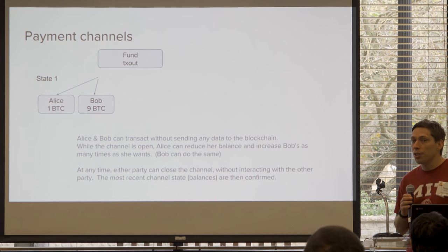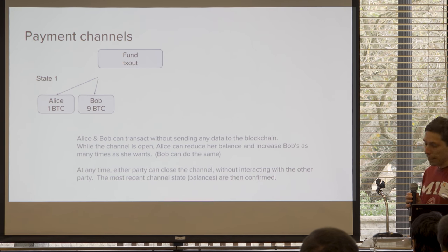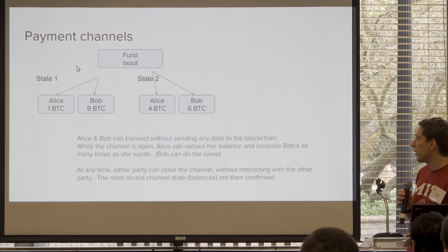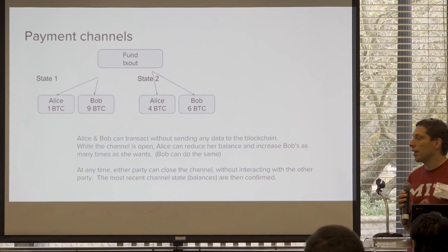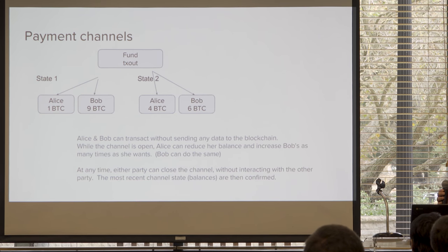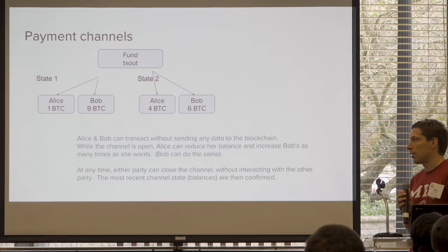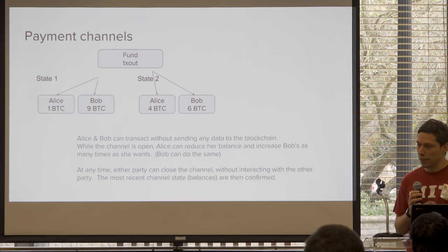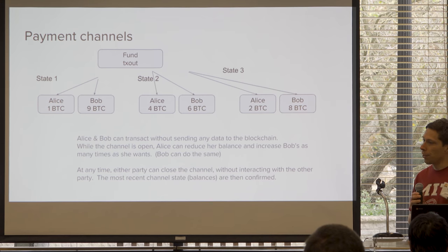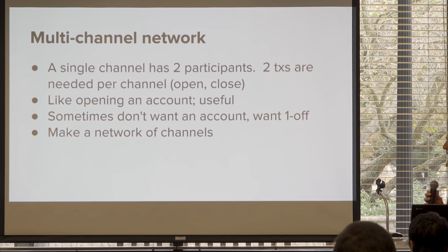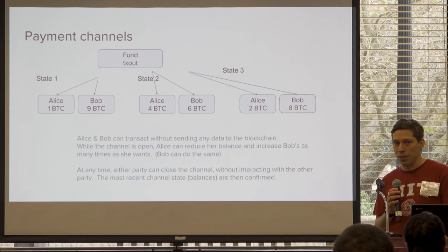Whenever either of them want to, they can broadcast. But instead what they do is exchange new signatures. Alice will say, okay, the new transaction we're going to agree on is I have four and you have six. They both send signatures for that transaction. Then the next state is Alice has two, Bob has eight. You can do this back and forth as many times as you want. I'll go into more depth of how exactly these things work — I'll go into a lot of gory details later.